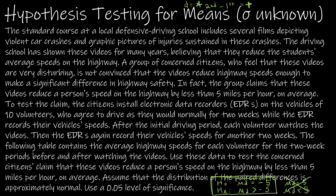The group claims these videos reduce a person's speed by less than five miles per hour on average. To test the claim, the citizens install EDRs on the vehicles of 10 volunteers — that's going to be N, the number of pairs of data equals 10. They drive for two weeks, watch the videos, and then drive for another two weeks after watching. This is a paired test because it's the same person before and after watching the video, making it dependent or paired data.